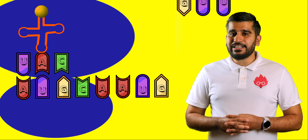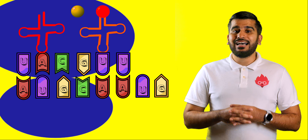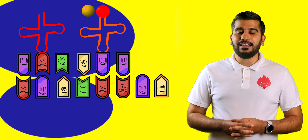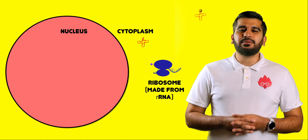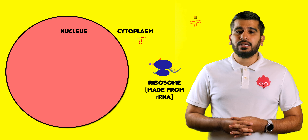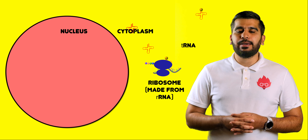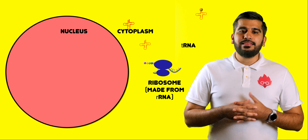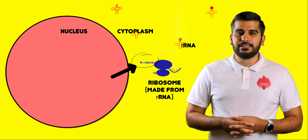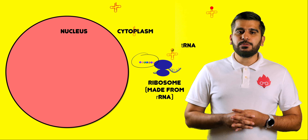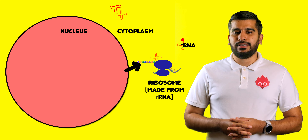A second tRNA binds to the next codon, forming a bond between the first and second amino acid. The first tRNA will then leave, collecting another amino acid. This process will continue until the stop codon is reached on mRNA. In this way, you end up with an amino acid chain called a polypeptide chain. These polypeptide chains can be folded into molecules such as enzymes.